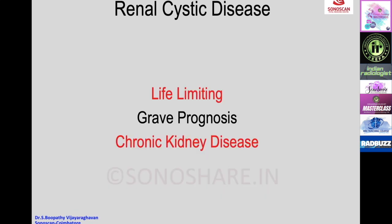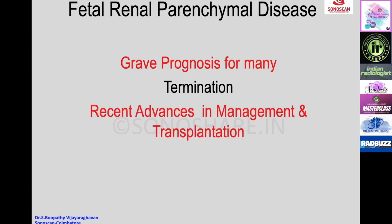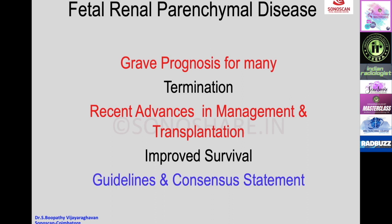Renal cystic disease can be life-limiting, involve grave prognosis, or result in chronic kidney disease. Certain diseases result in grave prognosis, and if such diseases are seen in the antenatal period, couples may decide to terminate. However, there are recent advances in postnatal management of renal cystic disease and improvement in transplantation resulting in improved survival. As a result, the requirement for guidelines and consensus statements has become necessary.